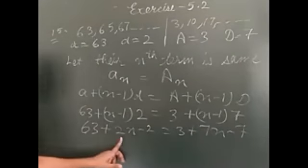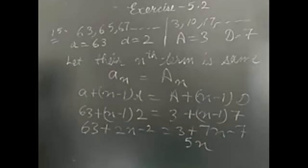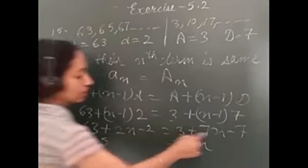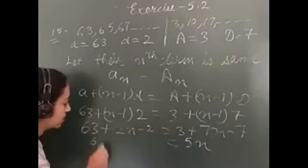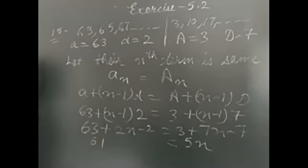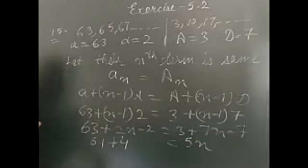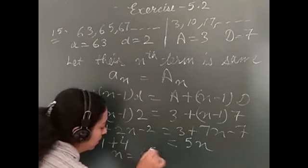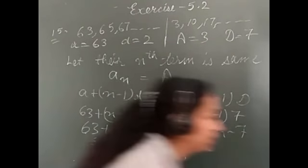N value terms on one side. Take this to the other side. 7n minus 2n will be 5n. And on the other side, 63 plus 2 is 65, 3 minus 7... 63 minus 2, sorry, is 61 and 3 minus 7, it will be minus 4. And minus 4, when it comes here, it will be plus 4. So, 5n is equal to 65. N's value will be 65 upon 5. And it will come out to be 13.